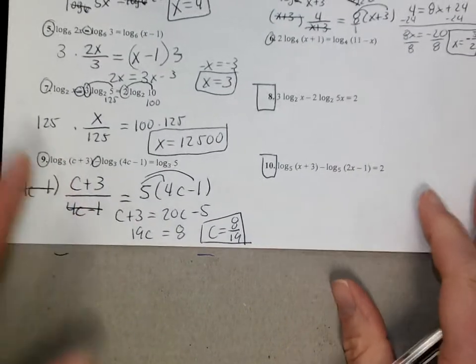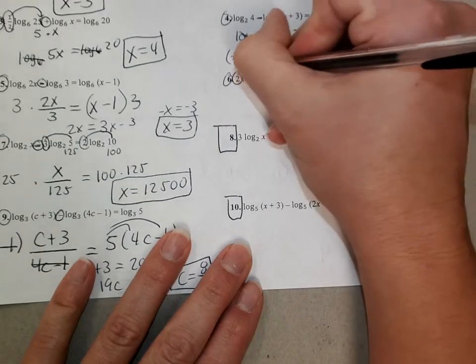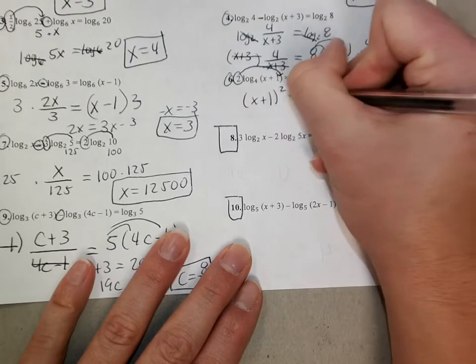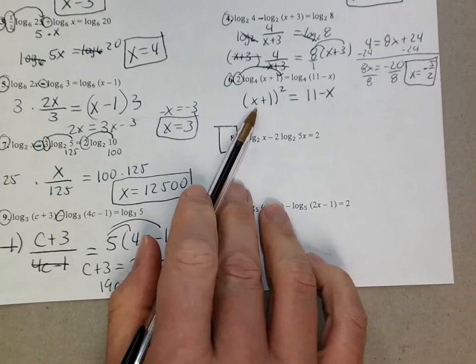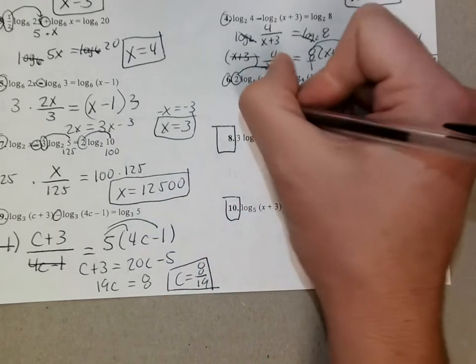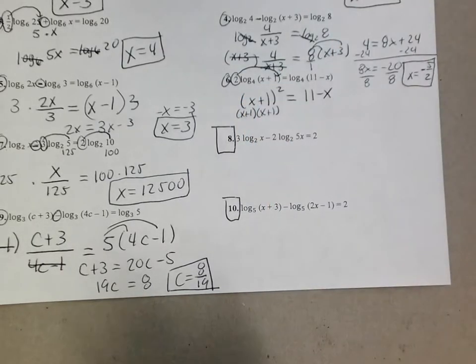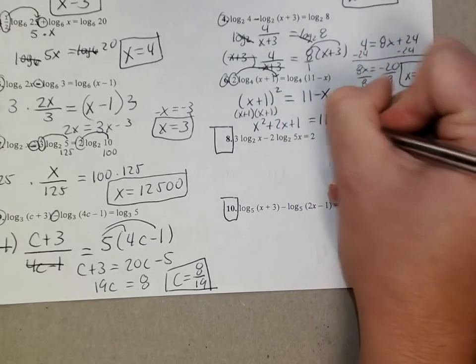One more here, and I'll show you why this one gets so tricky. It's super fun. It's because of this 2 right here. Remember, that becomes an exponent. So this becomes (x+1)² equals 11 - x. So when you square x + 1, don't tell me that that's just x² + 1. Remember, you have to actually FOIL this out. When you FOIL out an (x+1) times an (x+1), or you use your perfect square shortcut, you know that that's x² + 2x + 1 equals 11 - x.